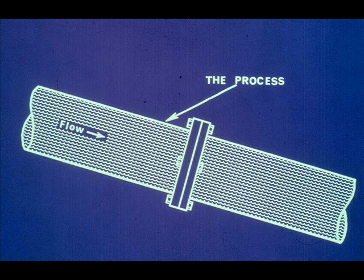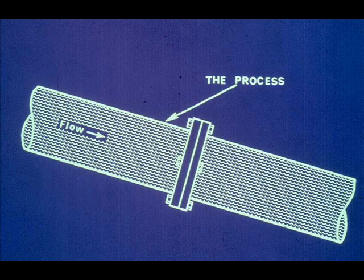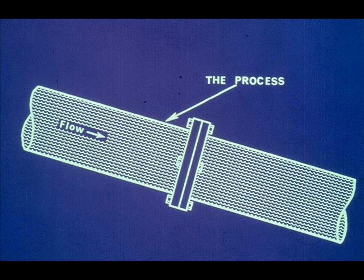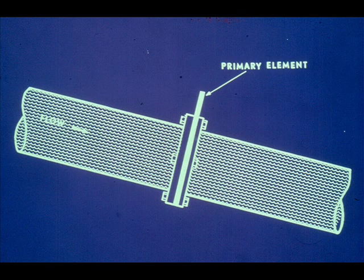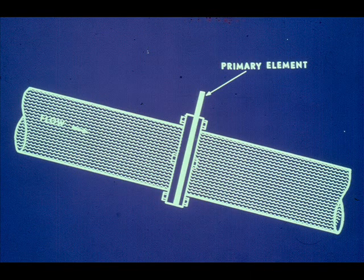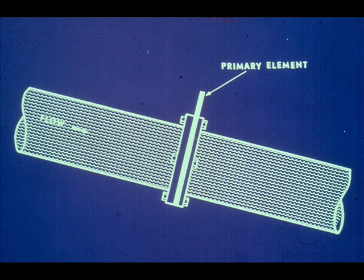The process is the system which is being controlled. It could be a flowing stream in a pipeline, a tank, a reactor, a tray in a tower, or any process system. The primary element is the sensing device which is used to determine the measurement of the process variable that is to be controlled: flow, pressure, temperature, or level.